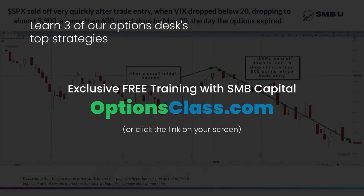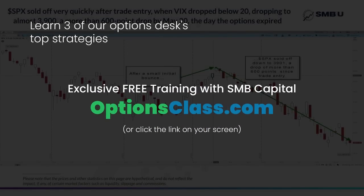Moving to the day this trade expires, the market actually very quickly started to sell off almost immediately after we put the trade on and continued downward more than 600 points by May 20, the day the options expired.